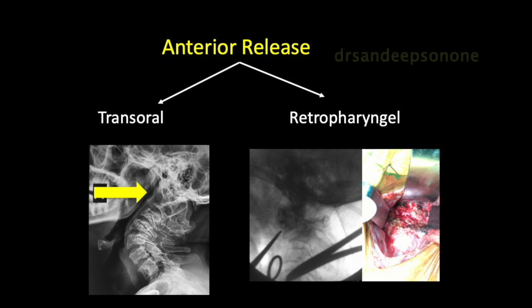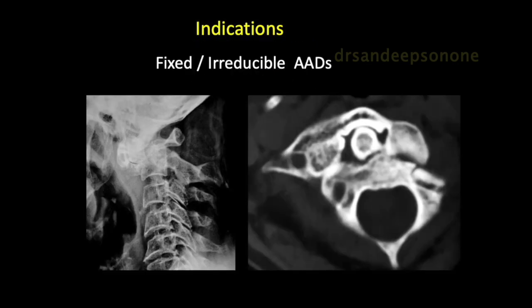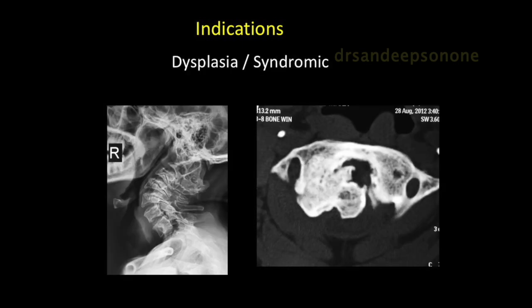When we talk of an anterior release, we have two options: either the transoral approach or the retrofaryngeal approach. The indications can be fixed or irreducible atlantoaxial dislocations associated with severe contracted structures anteriorly. It could be the ligaments or the bones with bony anomalies, or it could be one of those dysplastic atlantoaxial dislocations with severe bony anomalies not only posteriorly but also anteriorly, with bony fusion which prevents the relocation of the odontoid back into the C1 arch.